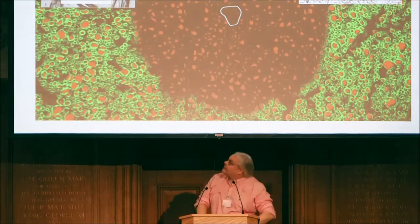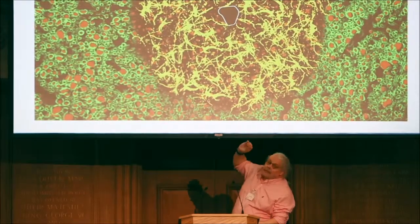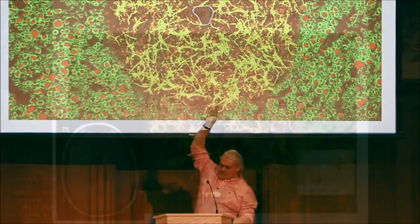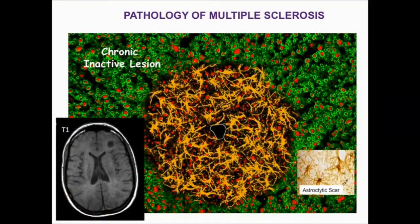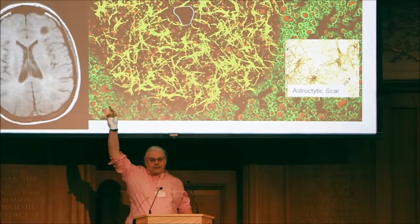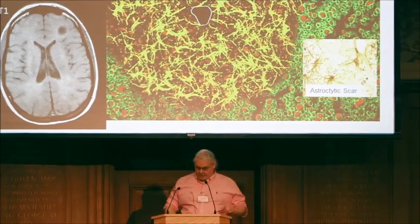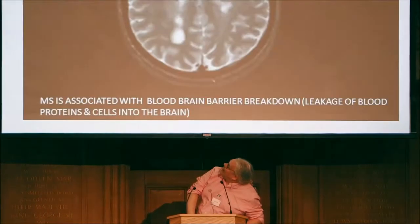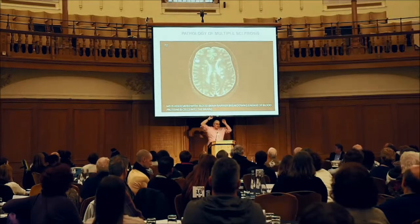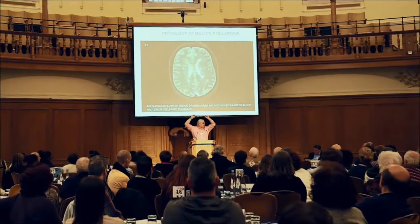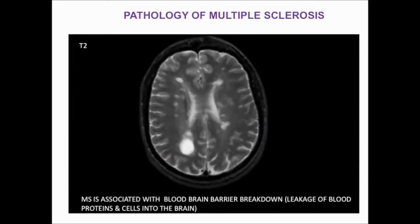After demyelination, different things can happen. One is that the lesion doesn't repair and it scars — a cell called the astrocyte makes the scar, called sclerosis, and that's why MS is called multiple sclerosis: multiple scars. On a T1 image you can see a black blob called a T1 black hole, which is suggestive of an old lesion. On a T2-weighted image the fluid is bright, and lesions come and go — for every clinical attack you may be able to find about 10 lesions on MRI.